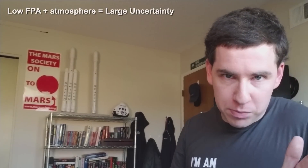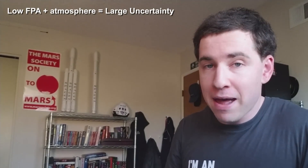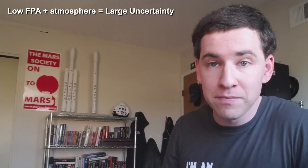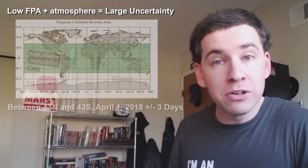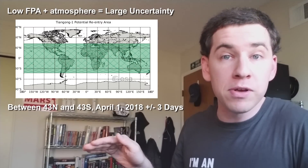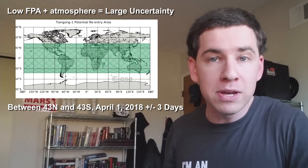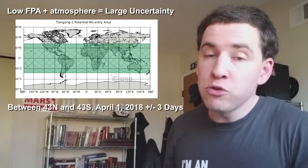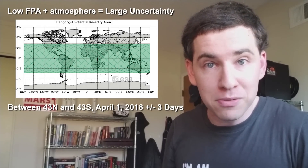So in summary, it's really hard to predict where Tiangong-1 is going to come down right now because its flight path angle is so shallow, and the atmosphere behavior at this altitude is very hard to predict. Right now, all we can say is that it'll come down somewhere between 43 degrees north and 43 degrees south, somewhere within a few days of April 1st of 2018. But those windows are going to get much, much smaller as the reentry gets closer.